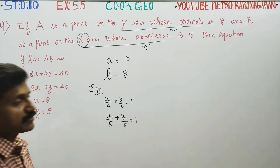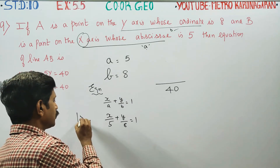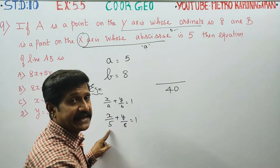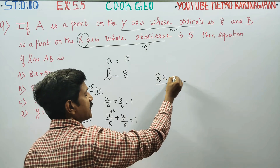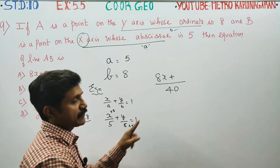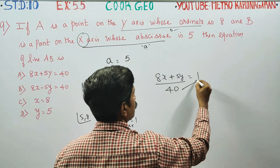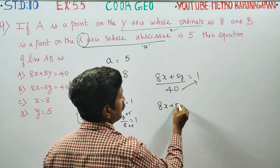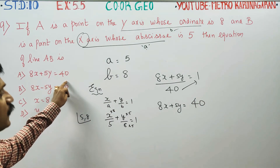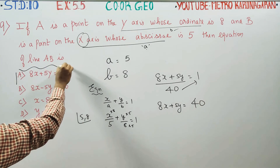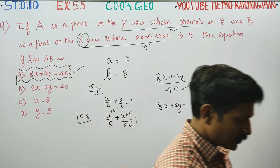To simplify, find the LCM of 5 and 8, which is 40. Multiply through: 5 tables of 40 gives 8 times, so 8 into x is 8x. 8 tables of 40 gives 5 times, so 5 into y is 5y. Cross-multiplying gives 8x plus 5y is equal to 40. So the final answer is 8x plus 5y equals 40.